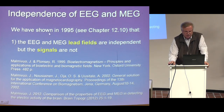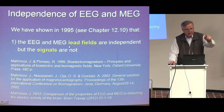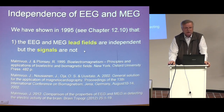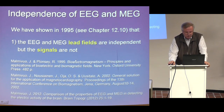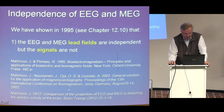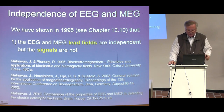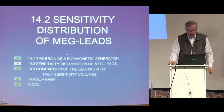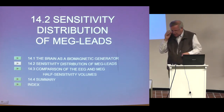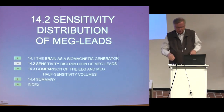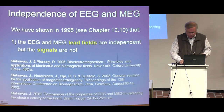We showed in 1995 that EEG and MEG lead fields are independent, but the signals are not. This was first published briefly in our book, and then in more detail in other papers. I don't return to the independence issue since I covered that in an earlier chapter. I go to the second issue: the sensitivity distribution of MEG leads.